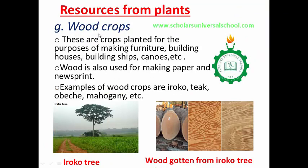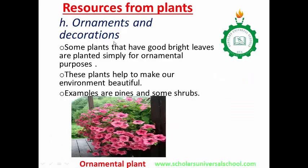Resources from plants also include wood crops. These are crops grown for the purpose of making furniture, building houses, and building sheds. They are also used to produce paper and newsprint. Plants that have good bright leaves are planted simply for ornamental purposes — they are planted for decoration and help to beautify the environment. Pines and some shrubs are used to beautify the environment.